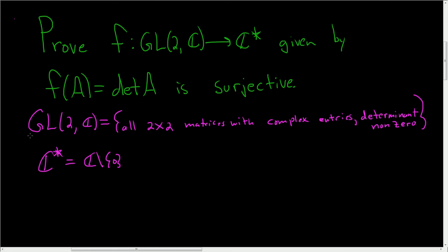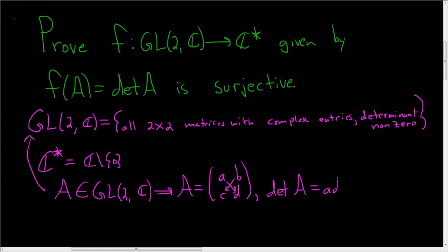And so what does a matrix look like in this set? Well, if you have an A in the general linear group of order 2, then A looks like (a, b, c, d). And a, b, c, and d are complex numbers. And the determinant of A is given by the formula ad minus bc.